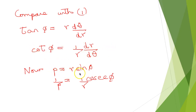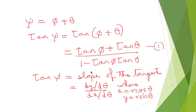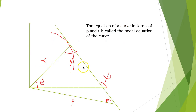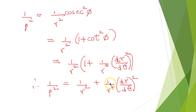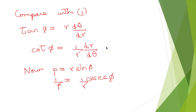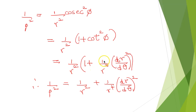Now, for the pedal equation, going back to the figure, p = r sin φ, since sin φ = p/r (opposite side over hypotenuse). So 1/p = (1/r) csc φ, and 1/p² = (1/r²) csc²φ = (1/r²)(1 + cot²φ). Substituting cot φ = (1/r)(dr/dθ), it becomes (1/r²)[1 + (1/r²)(dr/dθ)²], which gives 1/p² = 1/r² + (1/r⁴)(dr/dθ)².